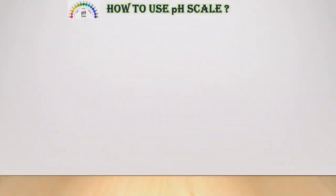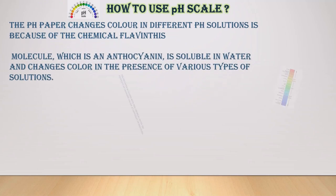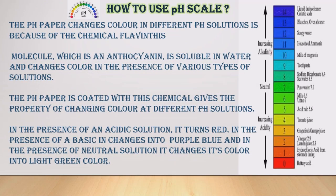How to use pH scale. The pH paper changes color in different pH solutions because of the chemical pigment molecules called anthocyanin, which is soluble in water and changes color in the presence of various types of solutions. The pH paper is coated with chemicals that give it the property of changing color at different pH solutions. In the presence of an acidic solution it turns red, in the presence of a basic solution it changes to purple-blue, and in the presence of a neutral solution it changes to light green.